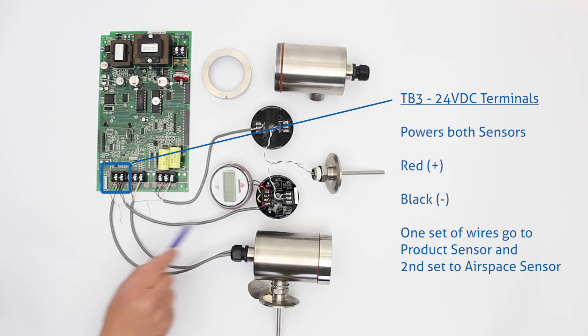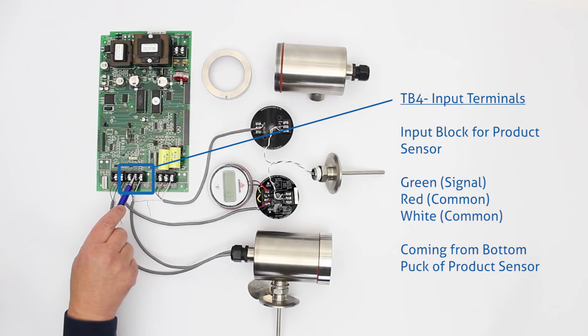The next block over is TB4, this is the input block for the product sensor and on this we have a green, a red and a white. The green is our signal, the red and the whites are the commons, these are coming from the bottom puck of the product sensor.